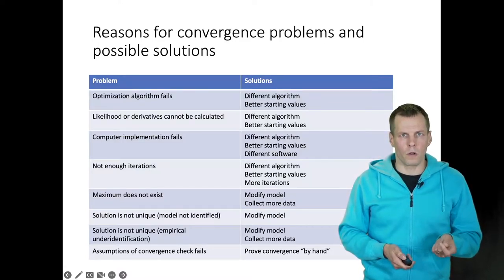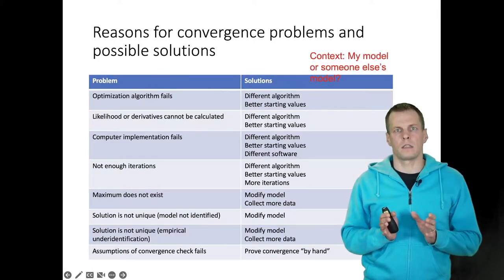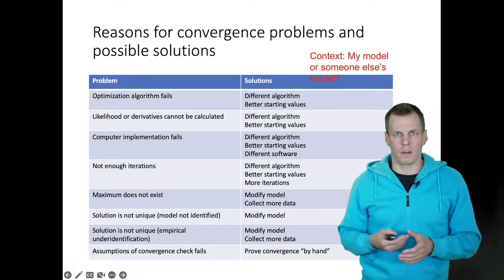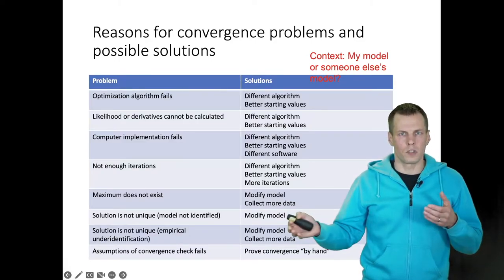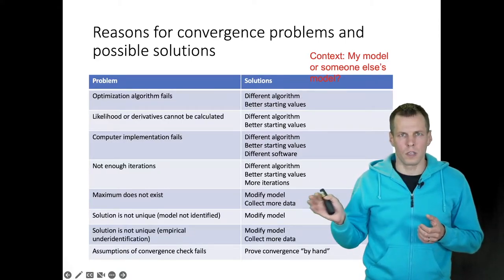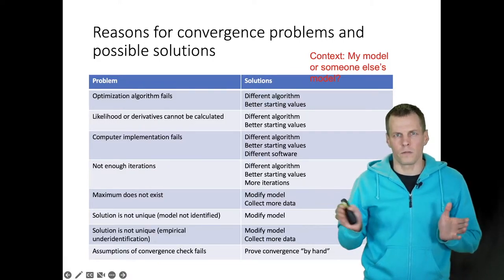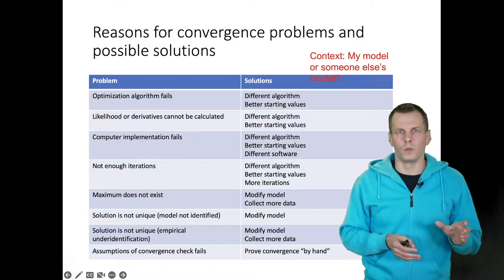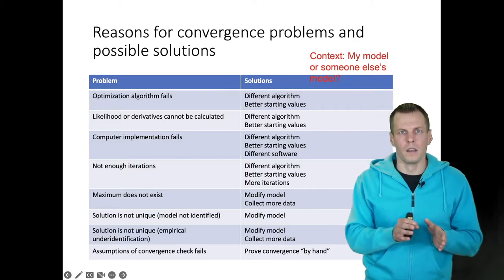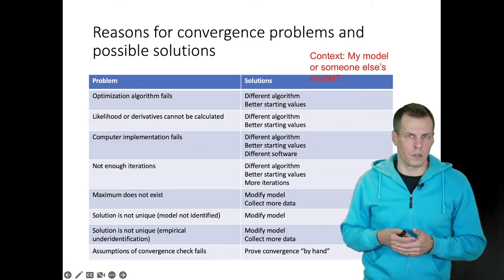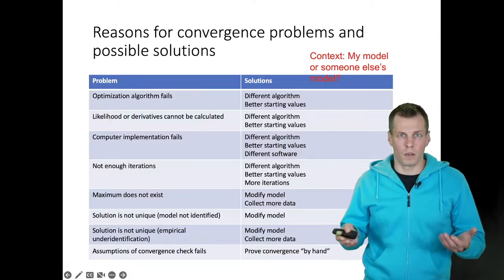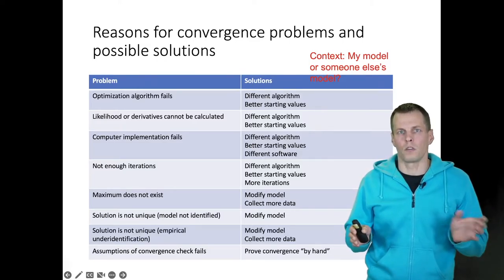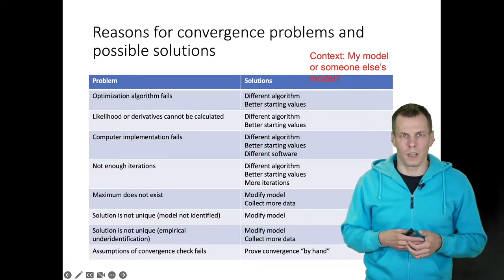We also need to understand that the workflow differs between different contexts. The most important context is whether this is my own model or a graduate student who is just starting with structural equation modeling or some other kind of statistical modeling and comes to me with a model that doesn't work. I do different kinds of models than students, and I also make different kinds of errors. For example, I rarely specify models that are not identified because I've seen so many models that I know in the specification stage whether they can be estimated. Someone with less experience might have an identification issue, so quite often these problematic models from beginners are actually models that can't be estimated because they're not identified. My problems tend to be more about data and estimation compared to model specification, and that background information tells me what to look at first.